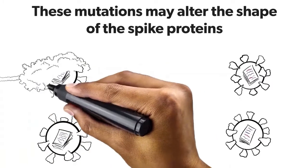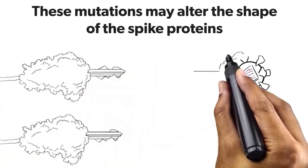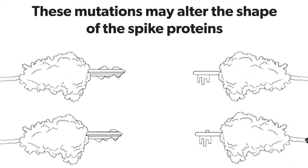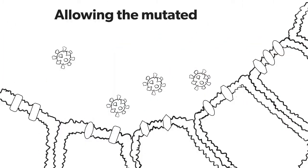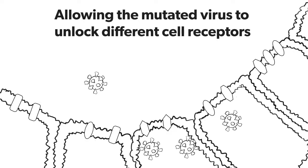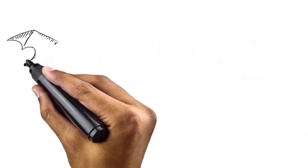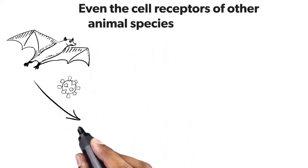These mutations may alter the shape of the spike proteins, allowing the mutated virus to unlock different cell receptors. Even the cell receptors of other animal species.